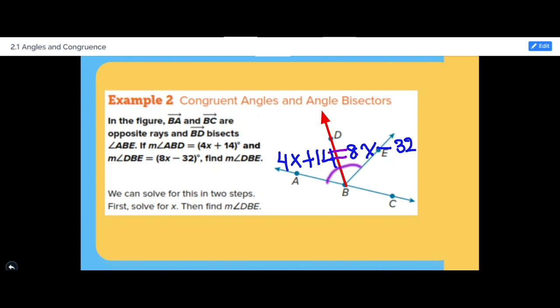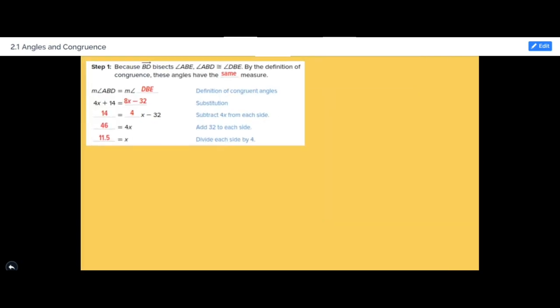In order to find angle DBE, we first have to find what is x. We're going to solve this equation for x: 4x plus 14 equals 8x minus 32, and solve it algebraically to find x.